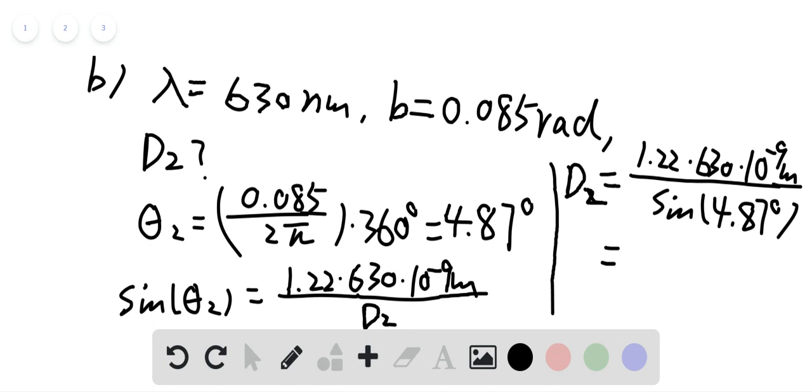And that will give us 9 times 10 to the negative 6 meters, which is 9 micrometers. Oh sorry, it's 9 micrometers. Okay, so the answer for d2 is 9 micrometers, and that's the answer for all the questions. Thank you.